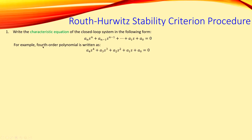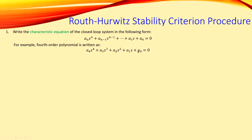For example, if you have a fourth-order system, it is written as a4·s⁴ + a3·s³ + a2·s² + a1·s + a0 = 0. So for a fourth-order system you have five coefficients: a4, a3, a2, a1, and a0.